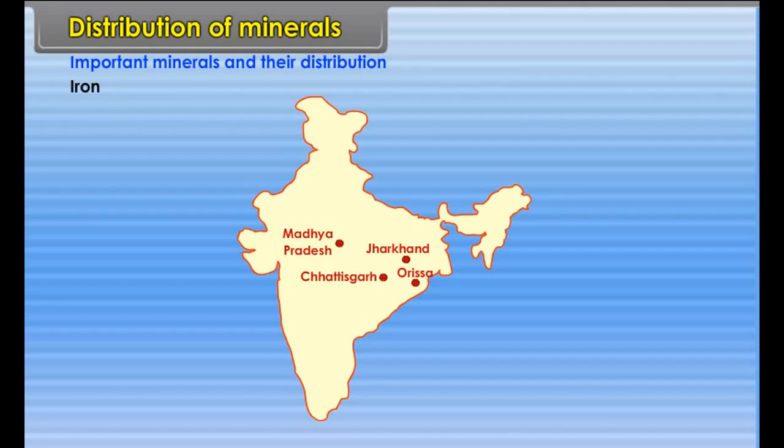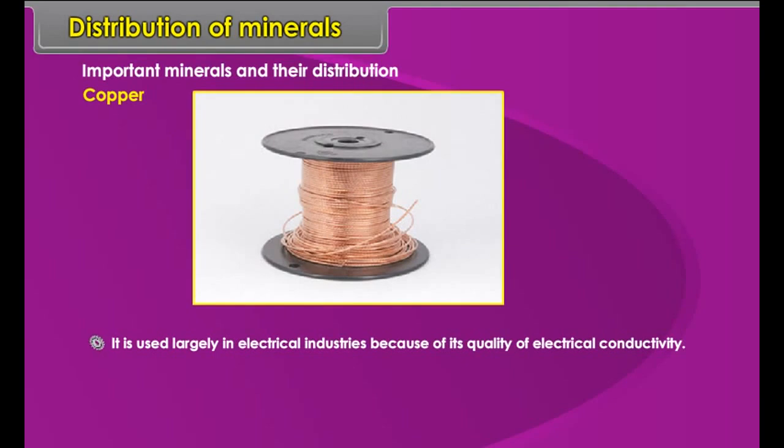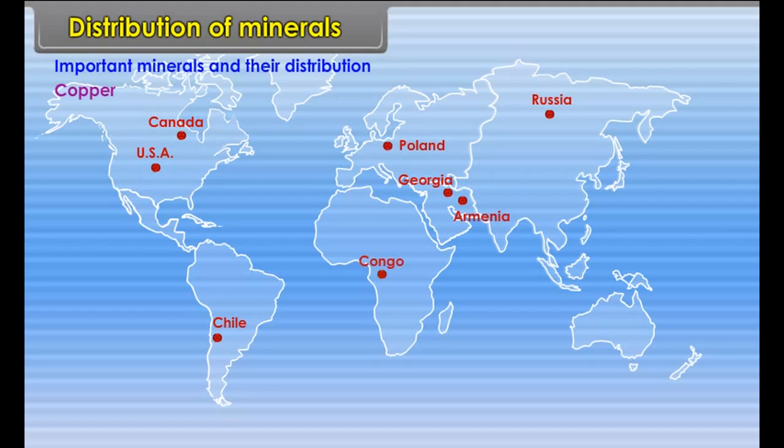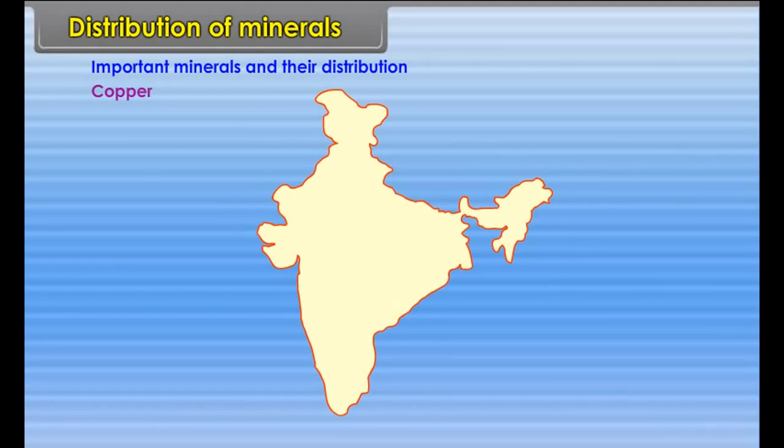Copper: it is used largely in electrical industries because of its quality of electrical conductivity. Location, world: Chile, USA, Canada, Poland, Russia, Georgia, Armenia, Congo and Zambia. In India: Jharkhand and Rajasthan.